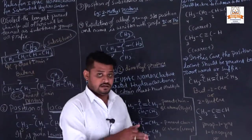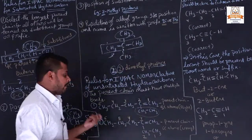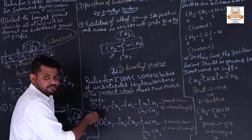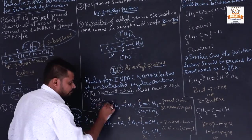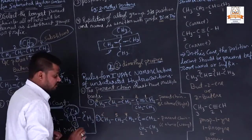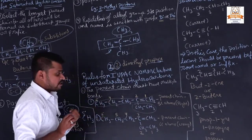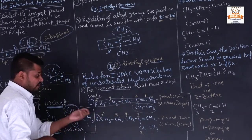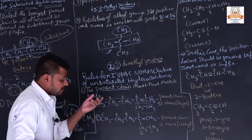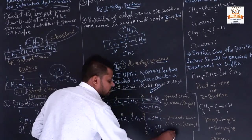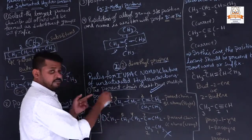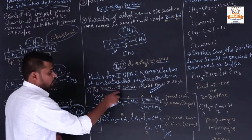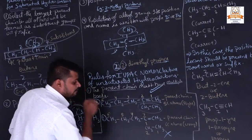If the multiple bonds are not present in the parent chain, it is not applicable as the parent chain. See the two examples: in this one the parent chain forms single bonds only. Here the longest chain is 1, 2, 3, 4, 5 — five carbons, pentane. But if we take the chain 1, 2, 3, 4, 5, 6 — six carbons, it is the longest chain. However, that chain has no multiple bonds.